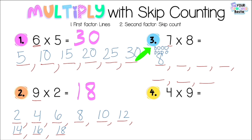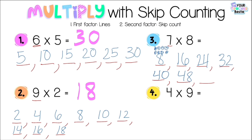Continuing to skip count by eight using the circles on each line: sixteen, then seventeen, eighteen, nineteen, twenty, twenty-one, twenty-two, twenty-three, twenty-four — third line. Then twenty-five, twenty-six, twenty-seven, twenty-eight, twenty-nine, thirty, thirty-one, thirty-two — fourth line. Then thirty-three through forty — fifth line. Then forty-one through forty-eight — sixth line. And lastly, forty-nine through fifty-six. So seven times eight is 56. Great job, besties!